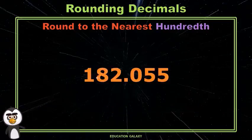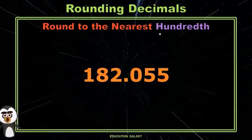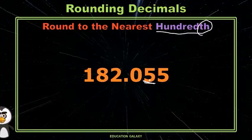Let's look at one more. One hundred eighty-two and fifty-five thousandths. So let's round this to the nearest hundredth. Looking here, there's my hundredths place. Tenths, hundredths. We're going to look back to the thousandths.